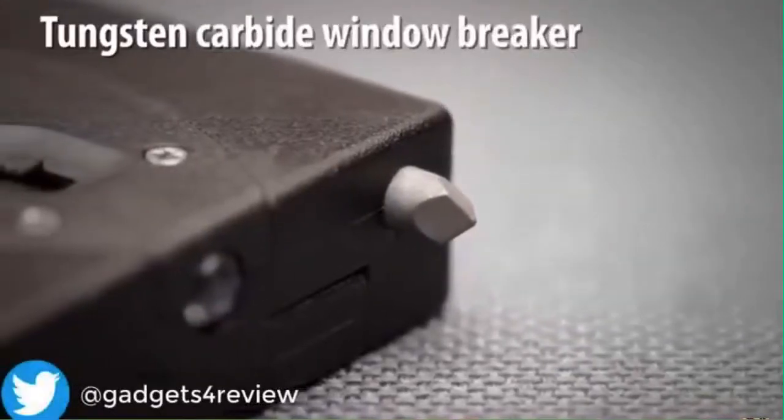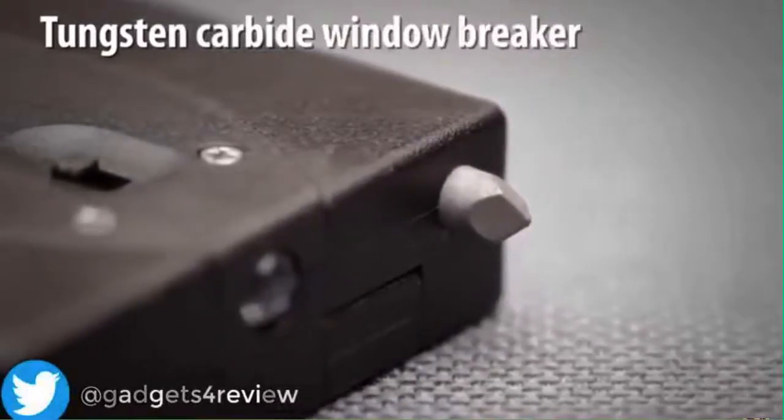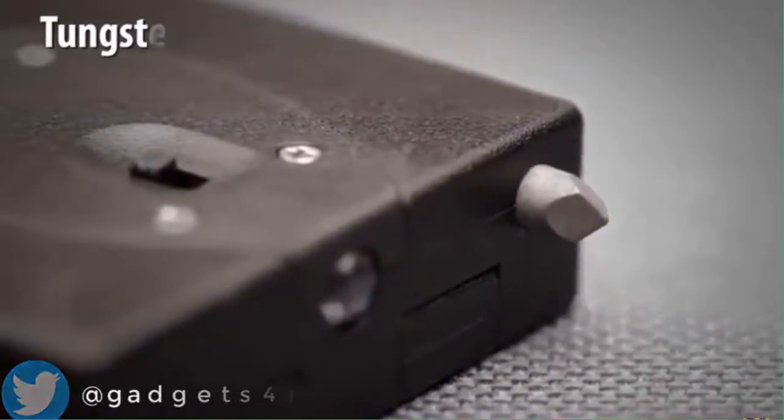The tungsten carbide window glass breaker is designed to instantly shatter the glass of any vehicle side window with a quick firm strike.